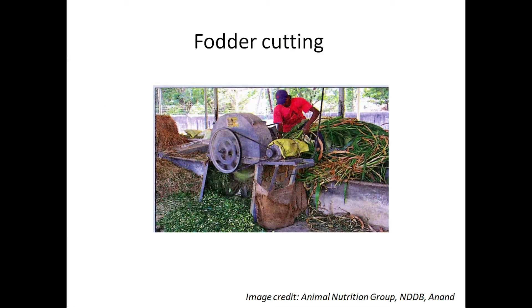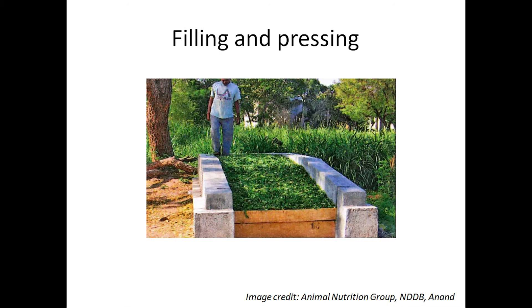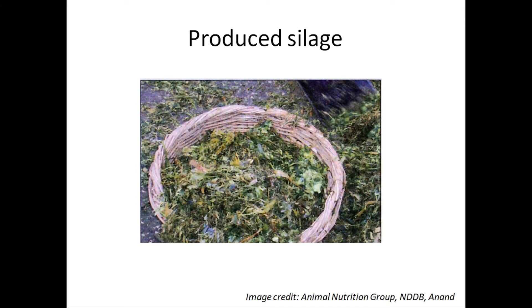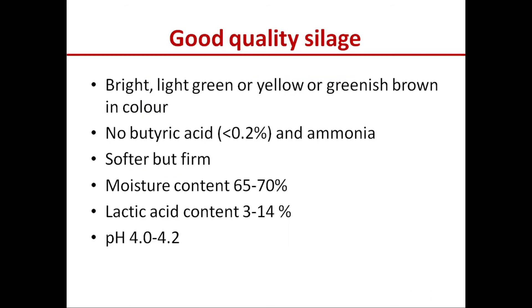Here we can see the green fodder being cut into small pieces with the help of a machine. The cut fodder is then used to fill the silo. The filled silo is covered well with a polythene sheet and this condition is kept for 45 days, creating an anaerobic condition so that fermentation occurs well. The silage produced in this process is of good quality — we can still see a green color in the final silage produced.